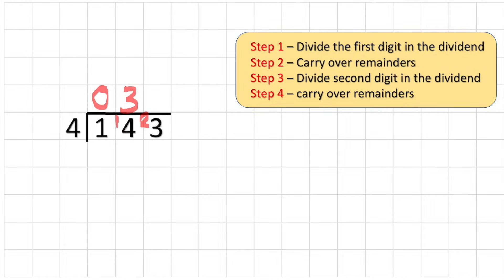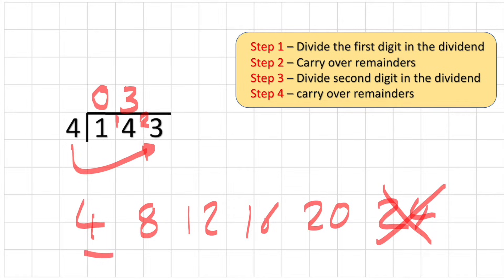And now my question says how many fours are there in 23? 4, 8, 12, 16, 20, 24. So I can't do that one. So I have one, two, three, four, five groups, but I have some left over because I needed to get to 23. So what's the gap between 20 and 23? 3. So I have a remainder of three.